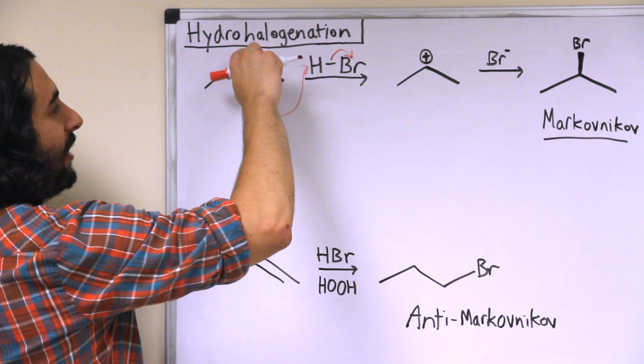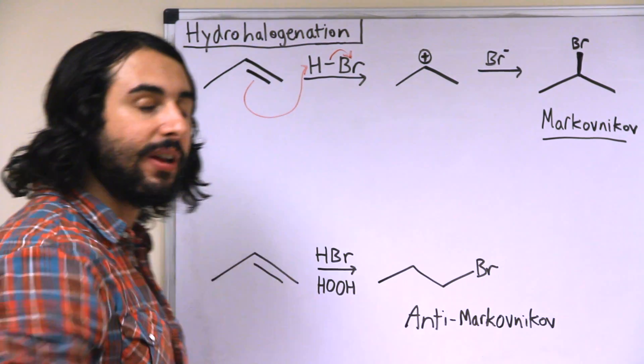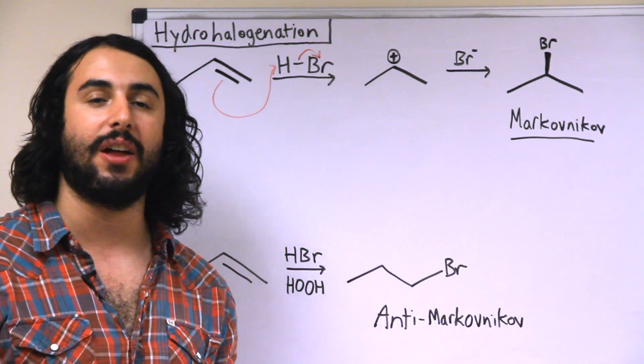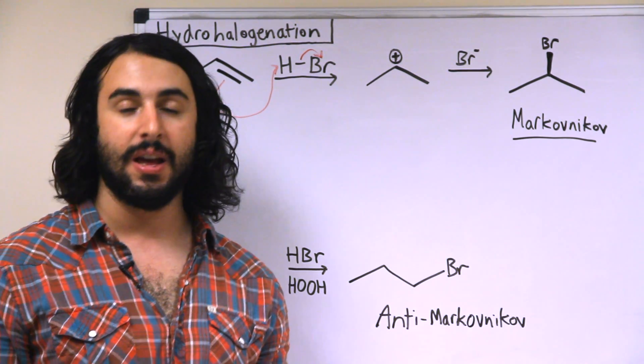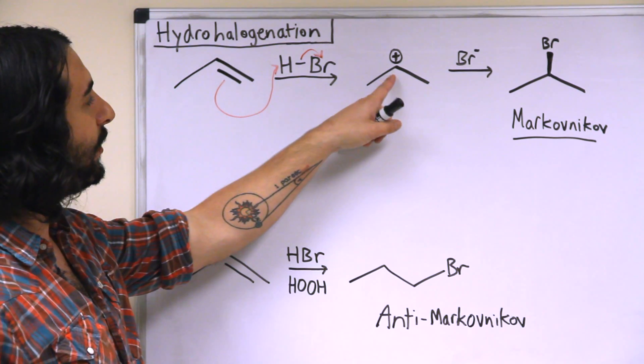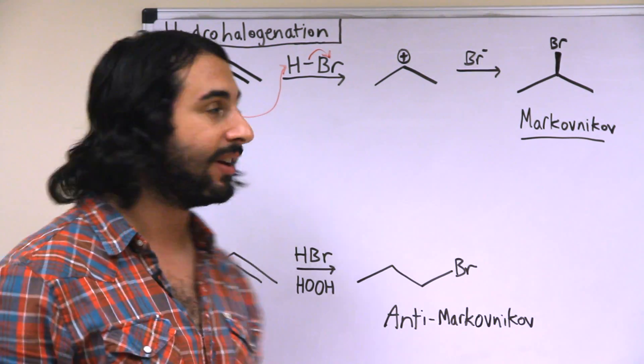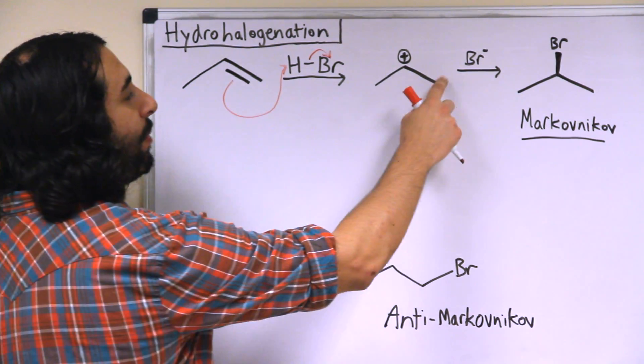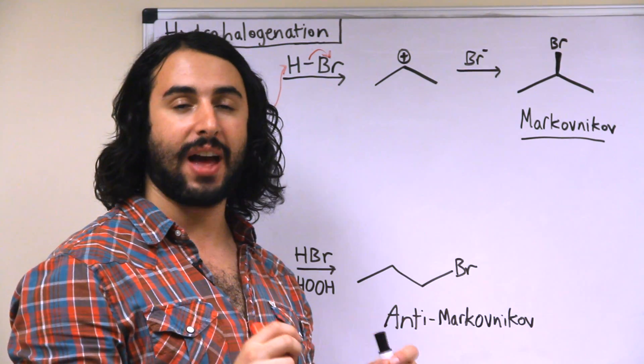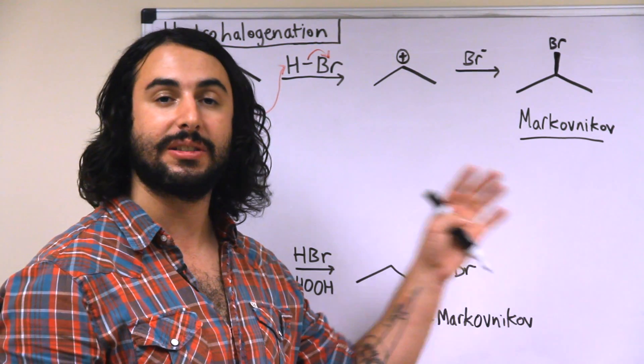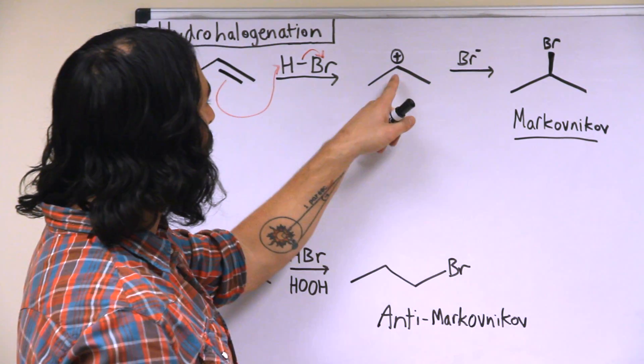Well, once again we know that the more substituted a carbocation is, the more stable it's going to be. And so for that reason we're exclusively going to get the secondary carbocation. This proton is attached to this carbon down here because if that is the way it goes we're going to get the more stable carbocation intermediate.